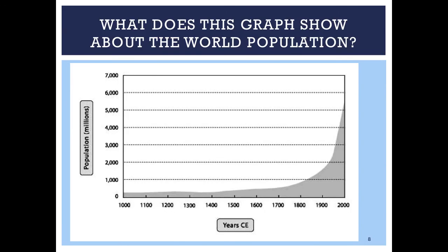This is a graph. Graphs show things in relation to each other. In this particular case, the graph shows world population in millions on the left and the passage of time on the bottom, starting with the year 1000 and going up to the year 2000. That graph would probably continue going up if we continued to the right. What inferences, judgments, or opinions could we develop based on looking at this graph? Go ahead and discuss that in your table groups and come up with a group answer.